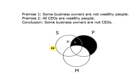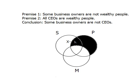The third step is to look at the diagram to see if we can read the conclusion off of it without changing it in any way. What we need to see is that some S are not P — since S is business owners and P is CEOs — meaning we need an X in the S circle but not in the P circle. Looking at the diagram, we see that that is the case, and so the argument is valid. The argument passes the test and is a valid argument.